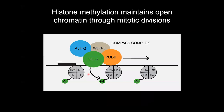An example of an active mark is H3K4 methylation. In C. elegans, this is largely laid down through the COMPAS complex in a transcriptionally dependent manner. As a gene is being transcribed, the COMPAS complex — which includes the methyltransferase SET2 — chugs along and adds this active mark, keeping the transcriptional memory of the gene being transcribed. The beauty of this is it can be inherited through mitotic divisions and across generations. So if you're establishing a cell fate during development, you can maintain that cell fate with the help of this transcriptional memory.